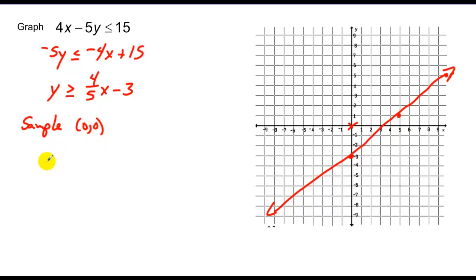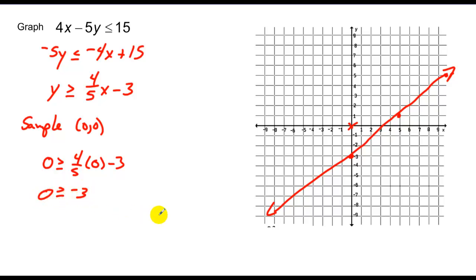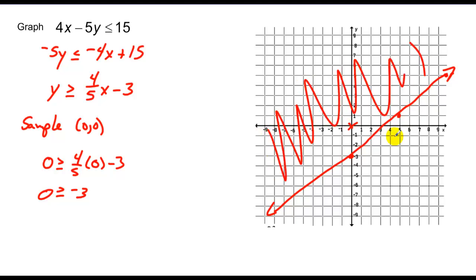Plugging in: 0 greater than or equal to 4/5 times 0 minus 3. Is 0 greater than or equal to negative 3? It sure is. So my solution point is in the region that has all the solutions, and I shade towards that.